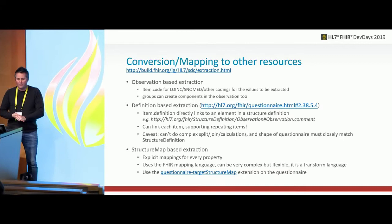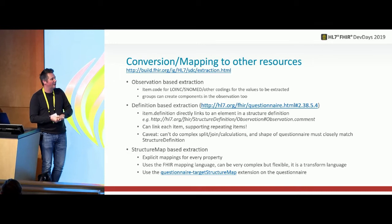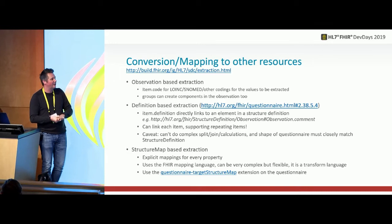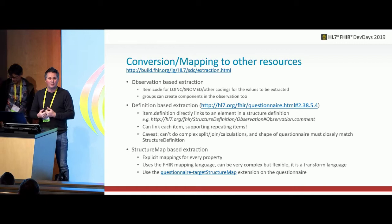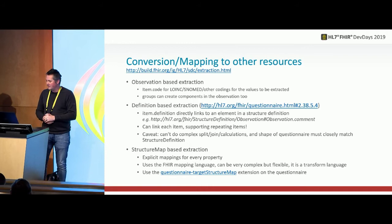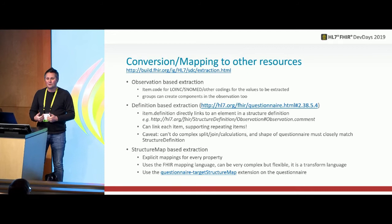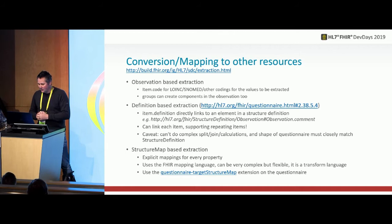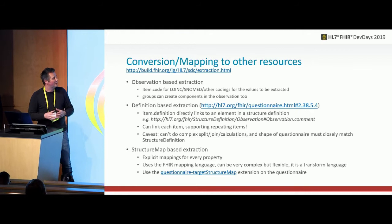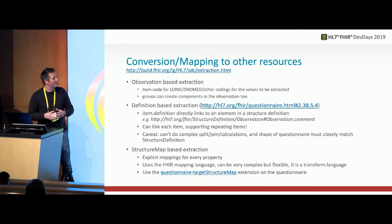Converting and mapping to and from other resources: someone's entered a form and we've received the questionnaire response. From the spec's perspective, we've defined three ways to do it — easy, medium, and hard — in terms of setup and using. The easy option has limited functionality, medium gives good coverage, and hard lets you basically do whatever you want. The observation-based approach is really for creating observations — if you want any other sort of resource, you've got to use one of the other two options.